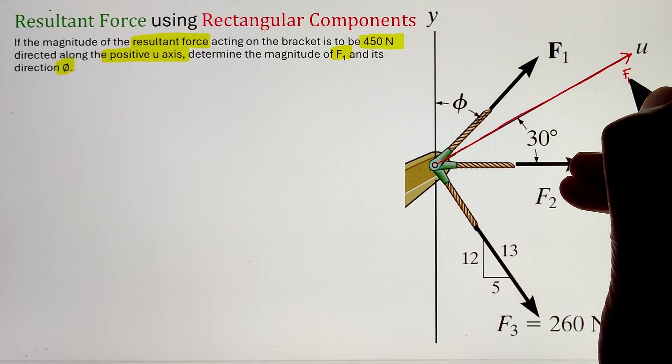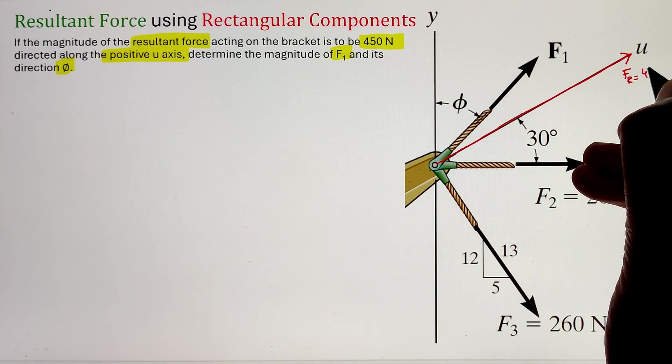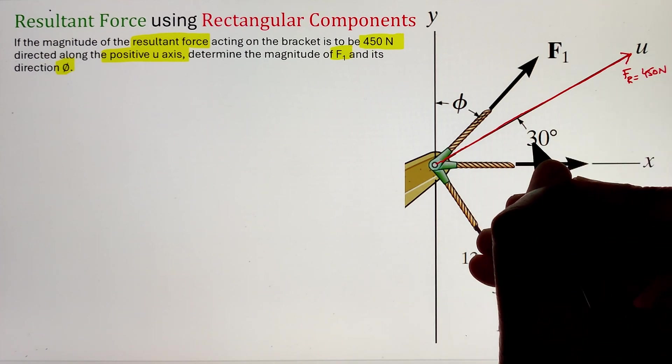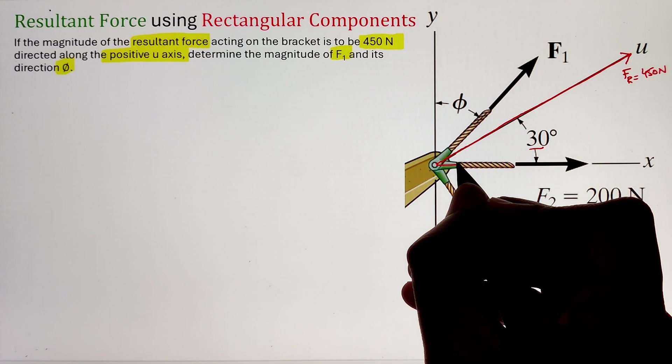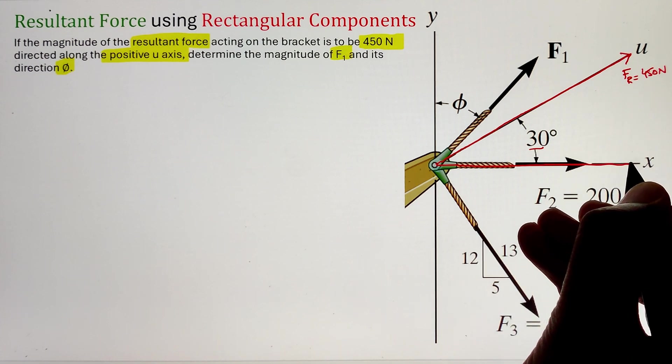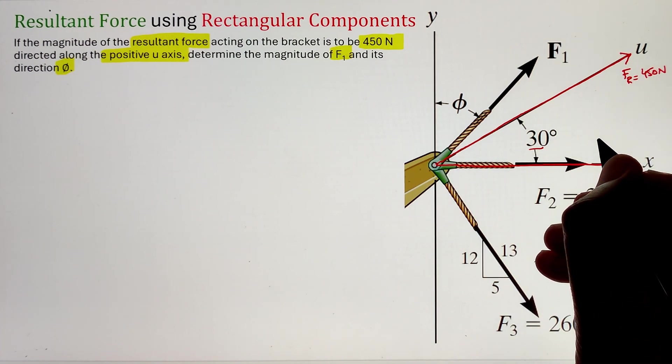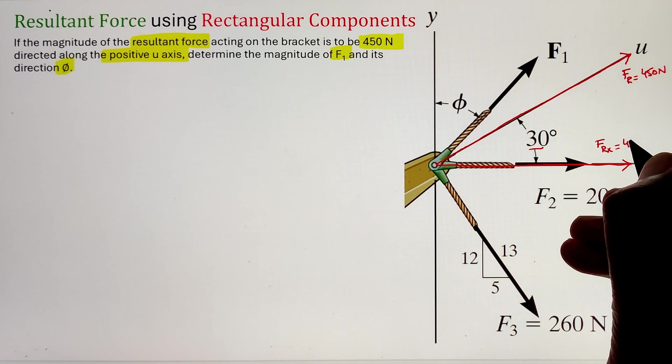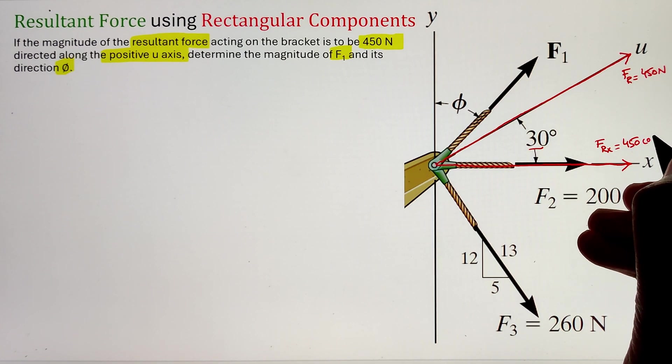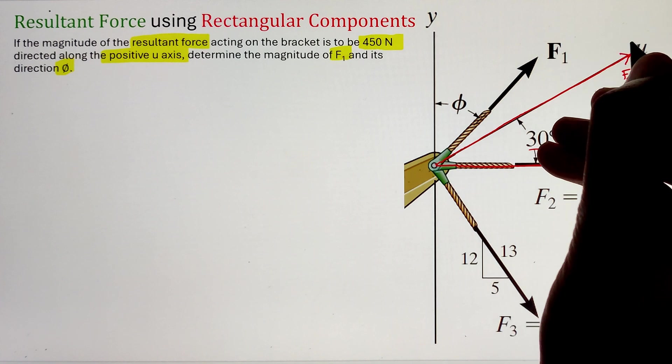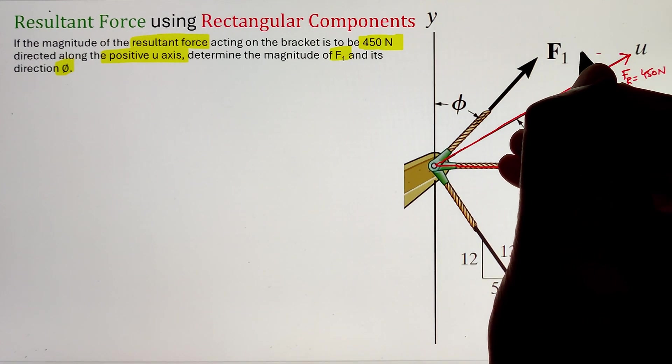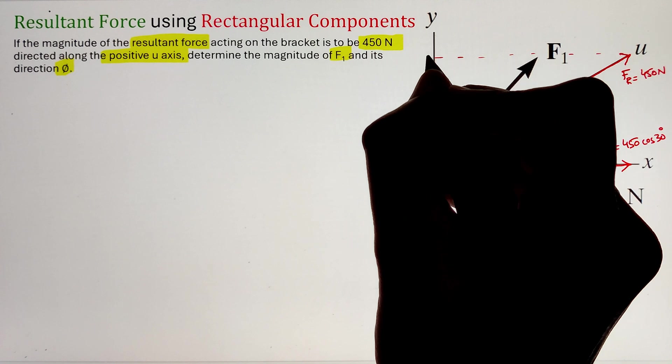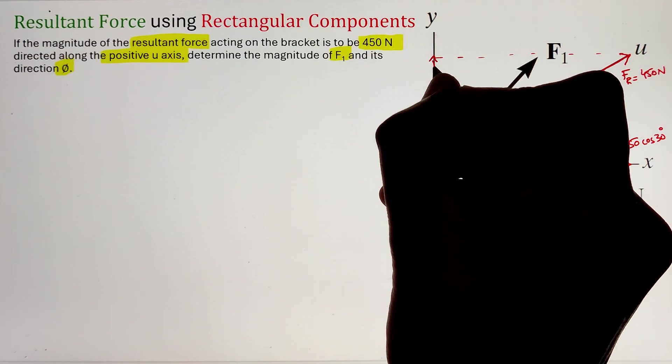To start, we can draw our resultant force Fr of 450 Newton along the positive u-axis and then divide this force into its x and y components by projecting the force utilizing the angle 30 degrees. Taking the cosine function of this angle will project the force 450 Newton along the x-axis, while taking the sine function of the angle 30 will project the force along the y-axis.